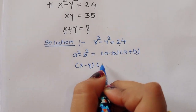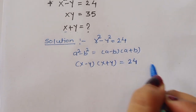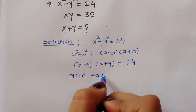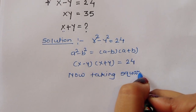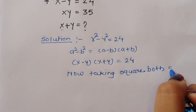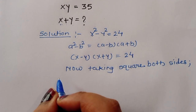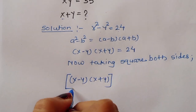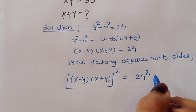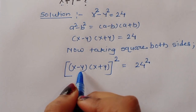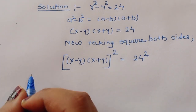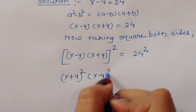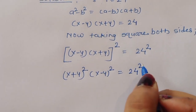Using this formula, we can write x minus y times x plus y is equal to 24. Now taking square on both sides, we get x minus y times x plus y, whole square, is equal to 24 squared. We can split this term and write x plus y whole square times x minus y whole square is equal to 24 squared.